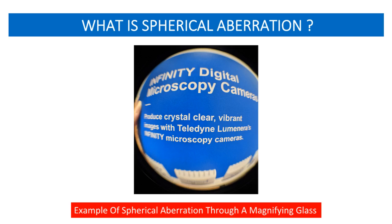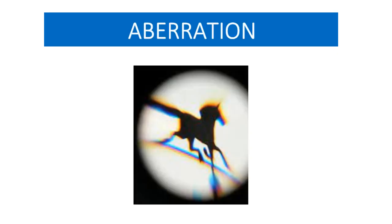What is spherical aberration? To answer this question, let us first understand aberration. In simple words, aberration is the distortion in the image generated by an optical system.